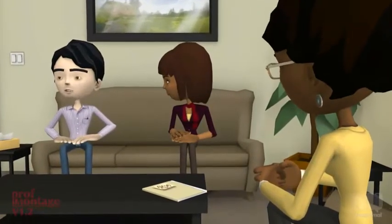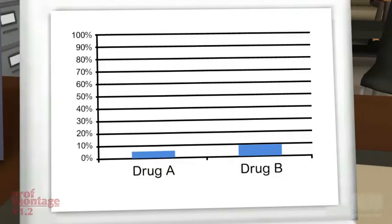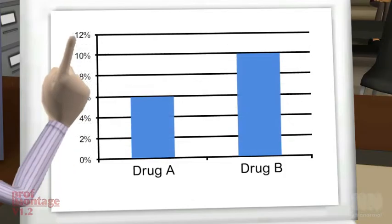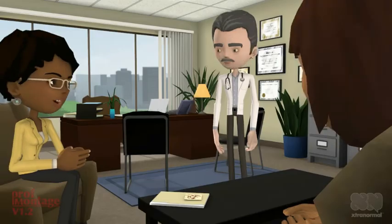Bar graphs or column graphs are easy to make up. Here's one with a minor difference. All I do is cut down the y-axis to make the difference look bigger. That's good and easy.